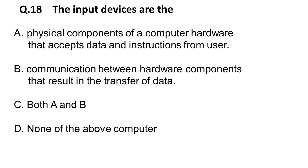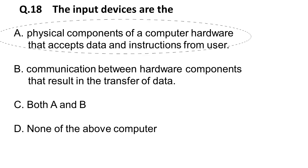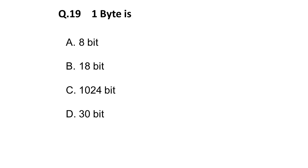Next question: input devices are — option A is physical components of computer hardware that accept data and instructions from the user, option B is communication between hardware components resulting in transfer of data (that would be USB), option C is both A and B. The correct answer is A — physical components of computer hardware that accept data and instructions from the user.